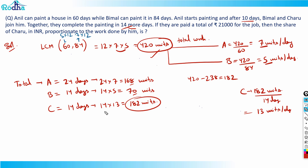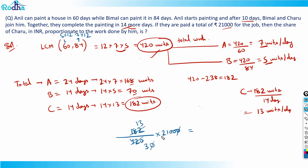What you need to calculate at the end is how much C will get out of the total payment. Out of the total 420 units, C has worked 182 units, so C's share = 182 ÷ 420 × 21,000. Simplifying: 14 goes 13 times into 182 and 30 times into 420, giving 13 × 700 = 9,100. So the answer is 9,100 rupees.